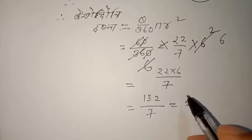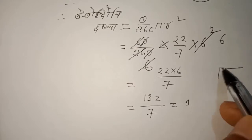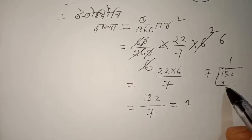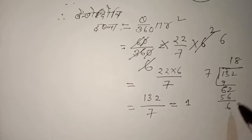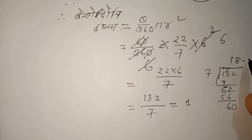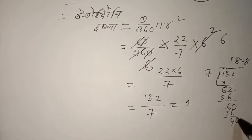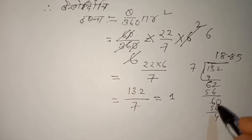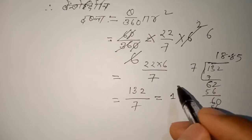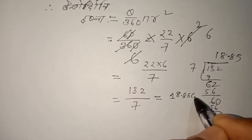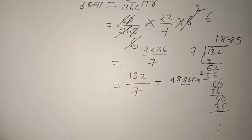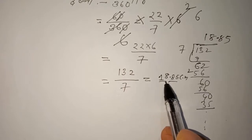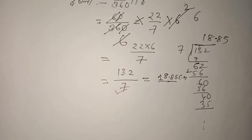We write it step by step: 7 into 8 is 56, 7 into 5 is 35 — working through the division. The answer is 10.85 centimeters squared. So the answer for this problem is 10.85 cm².